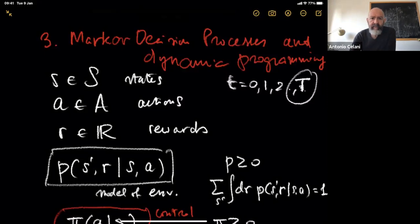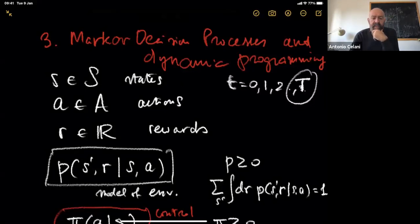Last time we introduced formally the notion of Markov decision processes. As you may remember, the structure is made of states, actions, and rewards, and then there is a transition probability, which means that we are explicitly including the possibility that everything is stochastic in the dynamics of our system. We also have access to a control over the system.